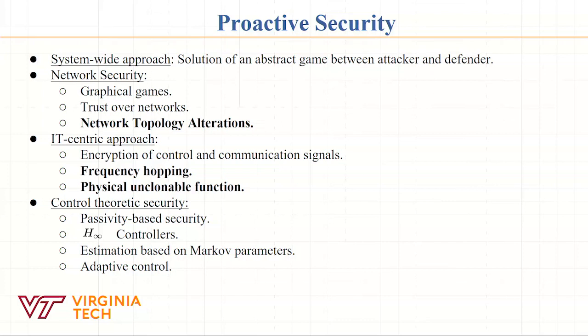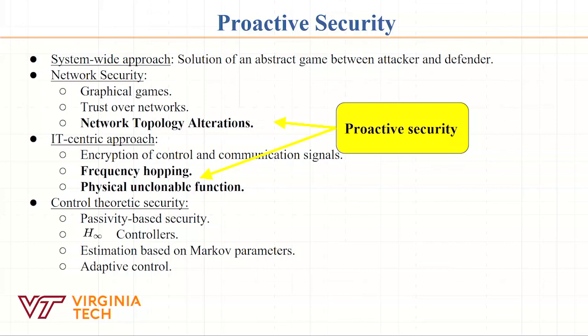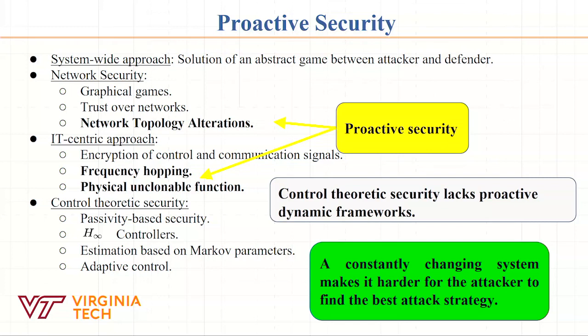Since we're control people, we find the controllable and observable subsets. There are different approaches in security: classical network security, IT-centric security, and control-theoretic security. The proactive security I described - moving target defense - is about always changing the system to make it more uncertain. There is also reactive defense, which tells you what to do. To the best of our knowledge, we are not familiar with any control-theory work that has proactive dynamic frameworks.